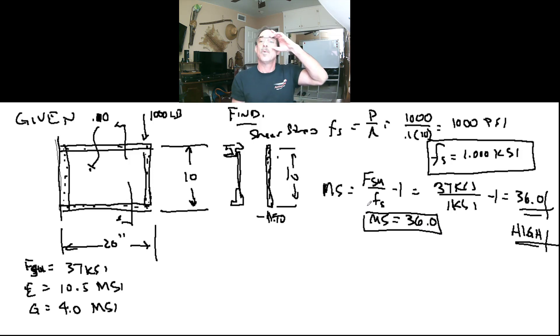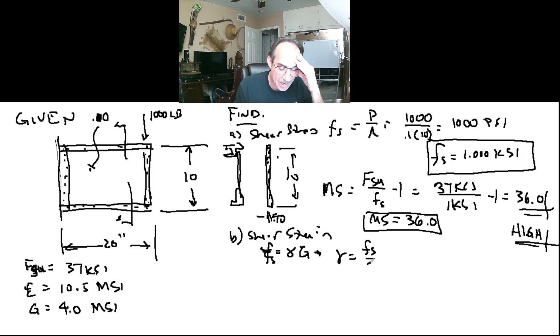Next, we're looking for the shear strain. So our section part, let's say that was part A. Part B is the shear strain. Well, that's simple, because we know from Hooke's Law that the shear stress, Fs, equals our strain times our modulus G, our shear modulus. Therefore, we can say that the strain is just the shear stress divided by G.